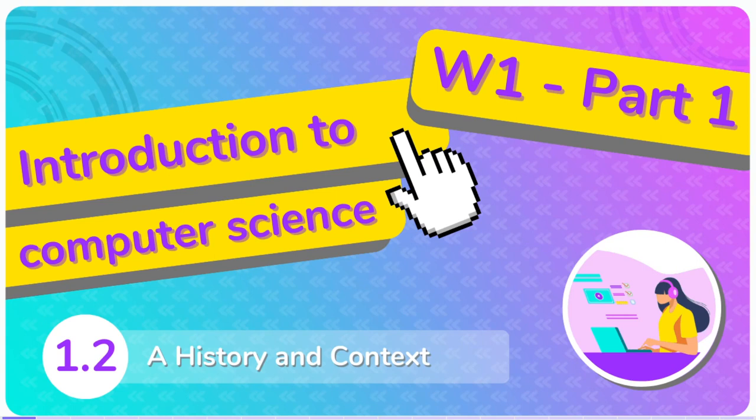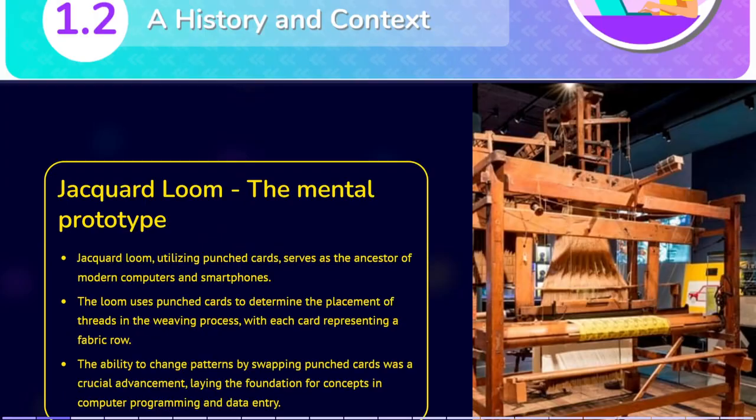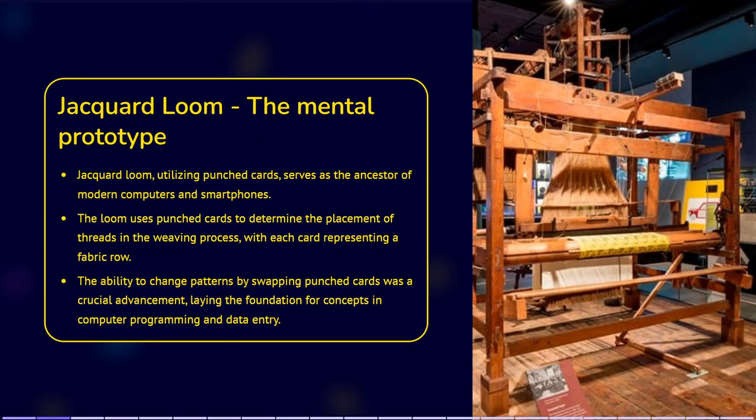Let's go through some history and context. This loom is the ancestor of every computer and smartphone on earth. A Jacquard loom works by using a system of punched cards, where each card represents a row of the fabric being woven. The presence or absence of a hole in each card determines whether a particular thread should be raised or lowered during the weaving process.